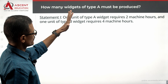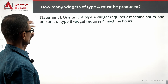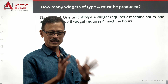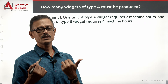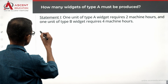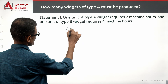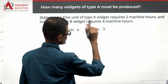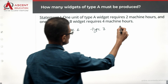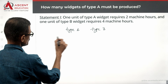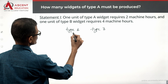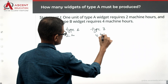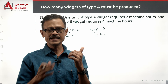Statement one says: one unit of type A widget requires two machine hours, and one unit of type B widget requires four machine hours. We'll look at this using counter-examples. The total time available is 80 hours. Type A takes two hours per unit and type B takes four hours per unit.